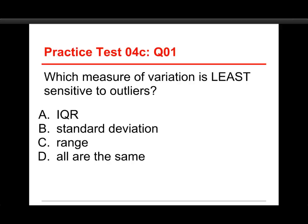The first question is, which measure of variation is least sensitive to outliers? The choices are the IQR (the interquartile range), the standard deviation, the range, or that they're all the same. The answer to this one is the IQR, the interquartile range.